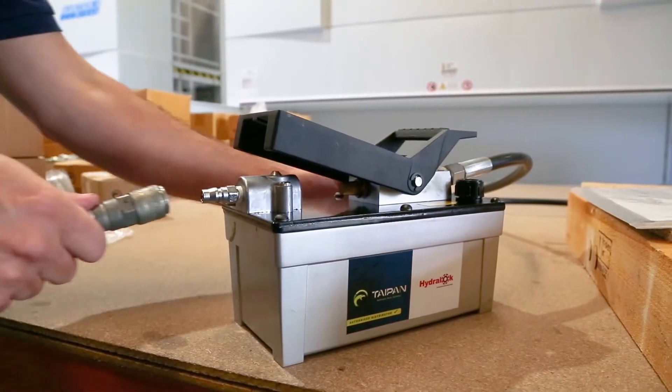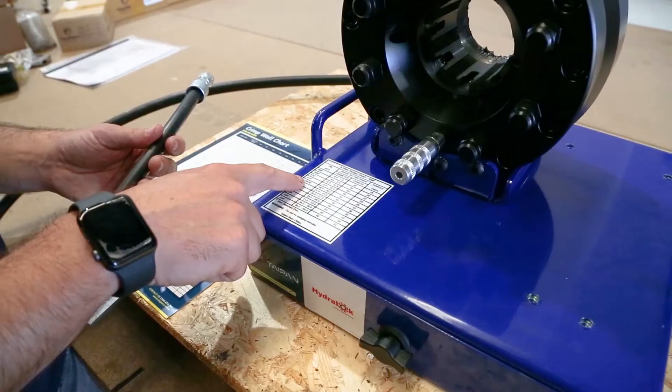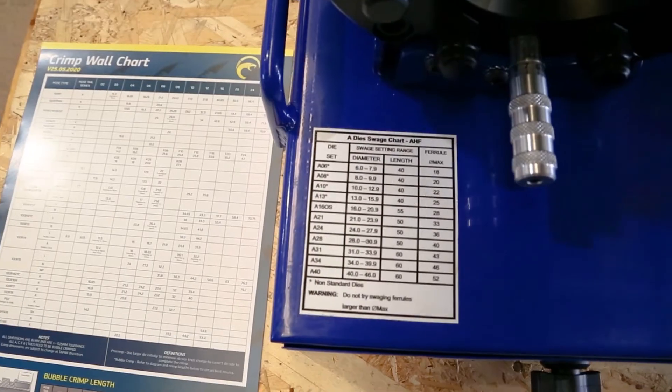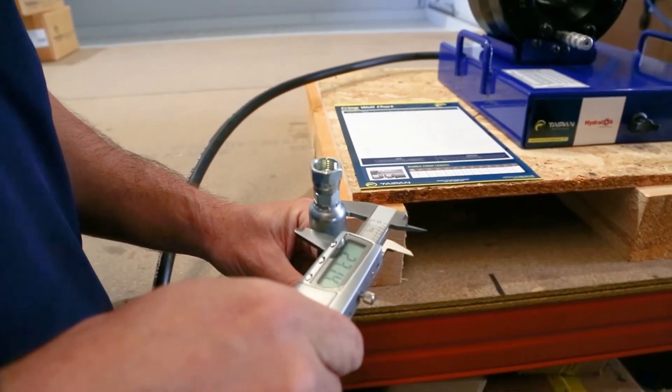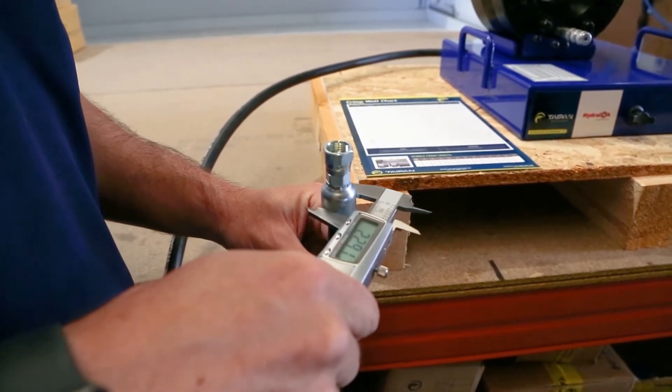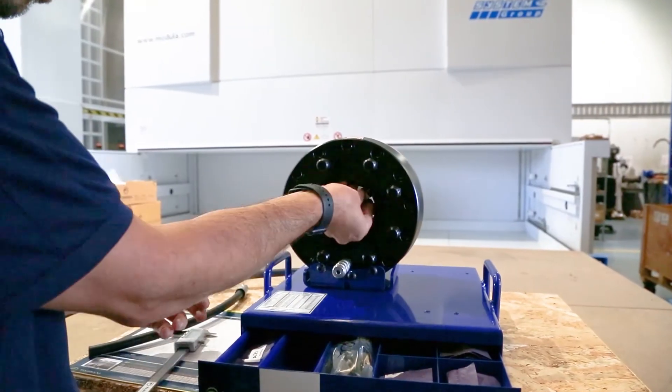Connect the airline to the rear foot of the pump. Select the correct crimp die size by using your crimp specification and die swage chart. Ensure the ferrule diameter meets with these guidelines. Correctly placing the dies in the crimper is important so no damage is done.